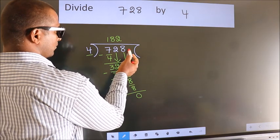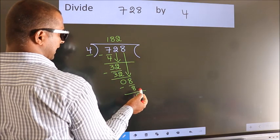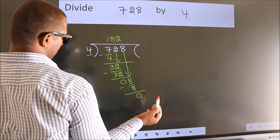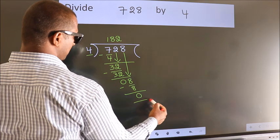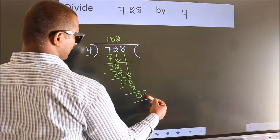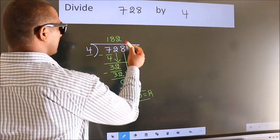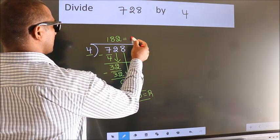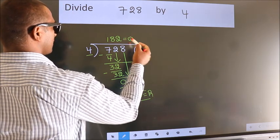No more numbers to bring down, so we stop here. This is our remainder. This is our quotient.